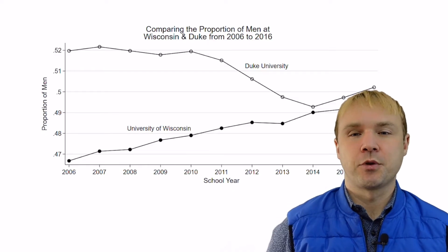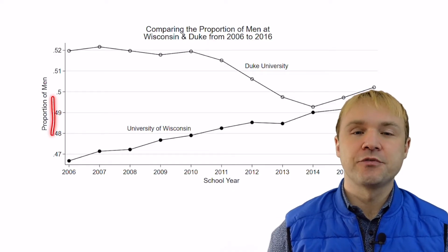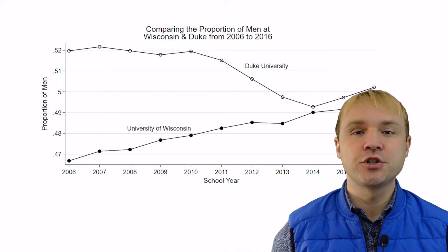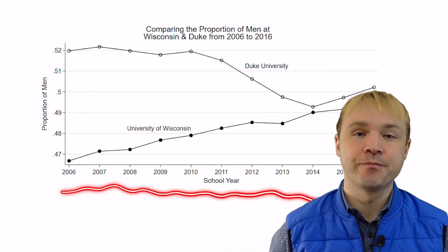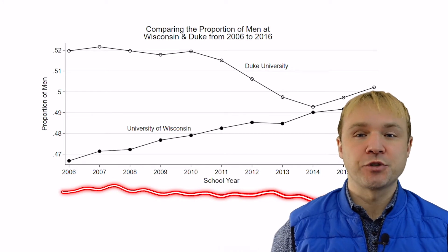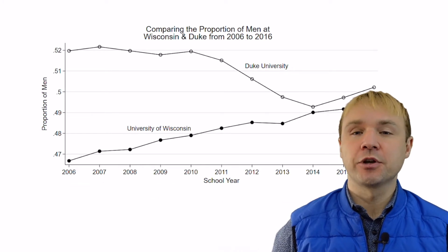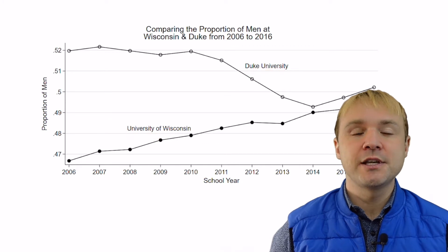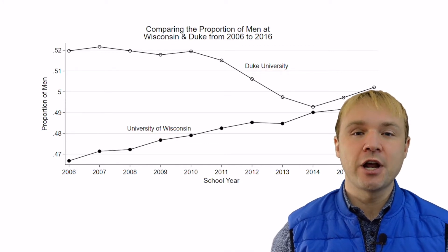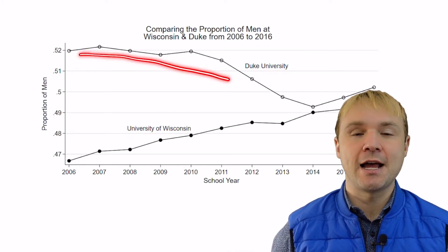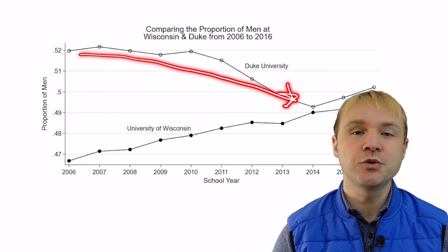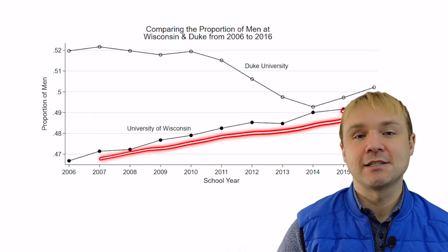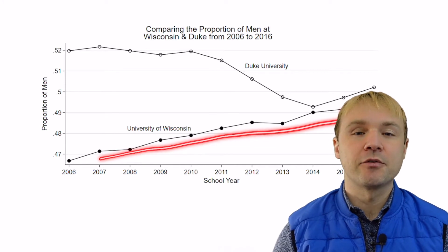Let's explore a little bit further. On the screen now is a visual which shows the proportion of male enrollment at two institutions over time. We're looking at the University of Wisconsin and also Duke University. We see, based on this chart, that generally over time the proportion of male enrollment at Duke University has decreased and the proportion of male enrollment at Wisconsin has increased.